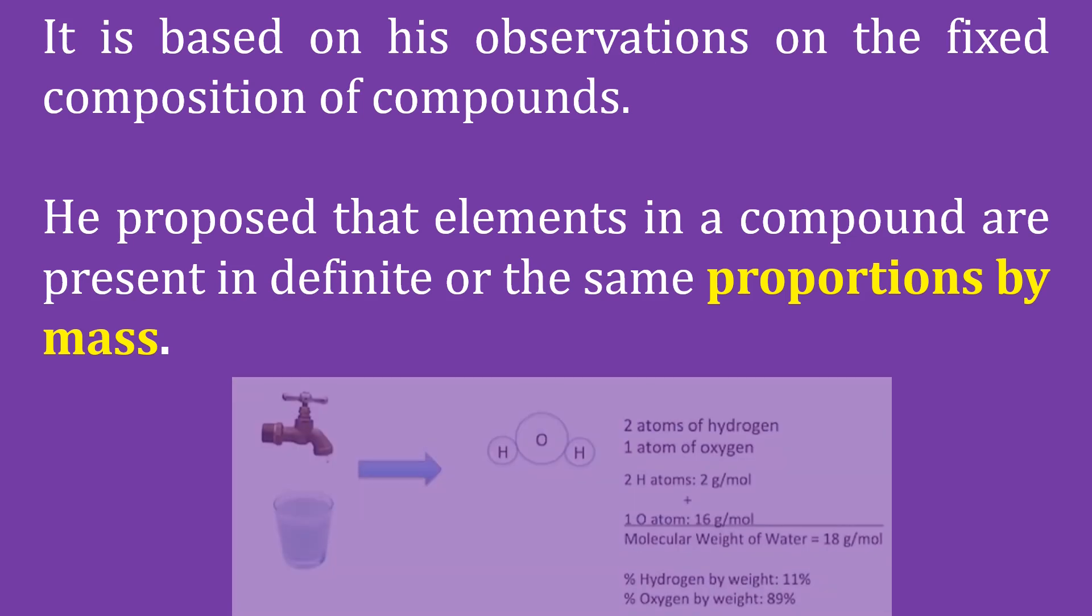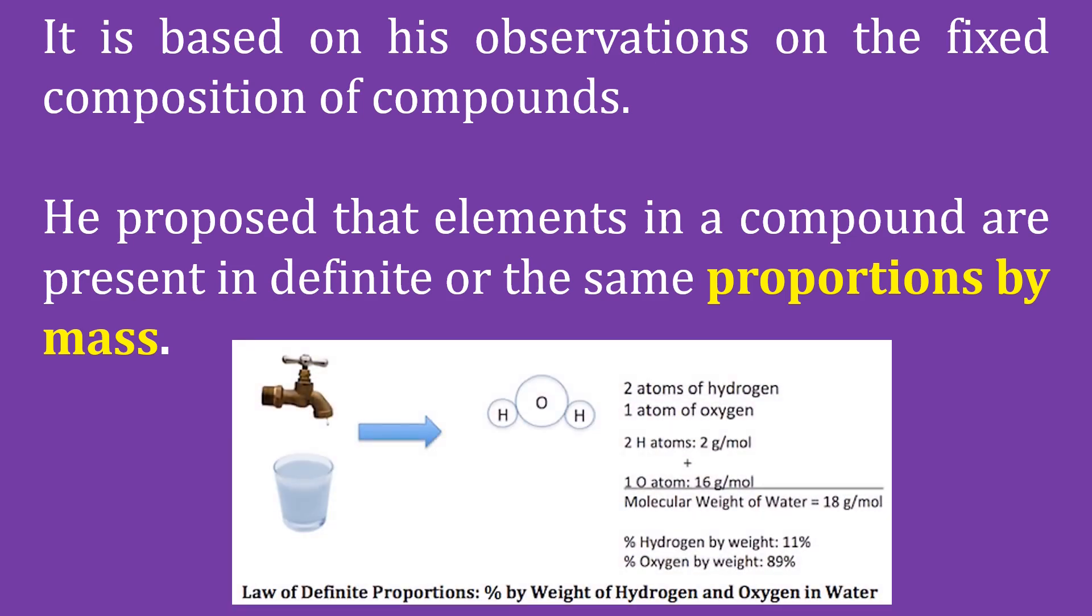Just like in the given example, water has two atoms of hydrogen and one atom of oxygen. In calculating the molar mass of water, it is equivalent to 18 grams per mole, wherein 11% of hydrogen comprises a water molecule and 89% of oxygen.